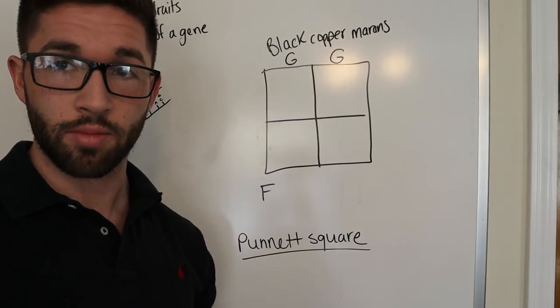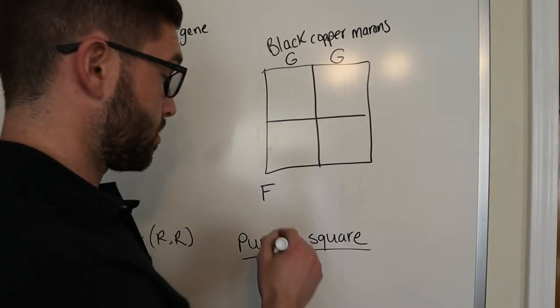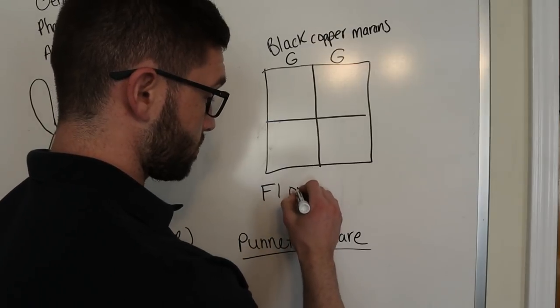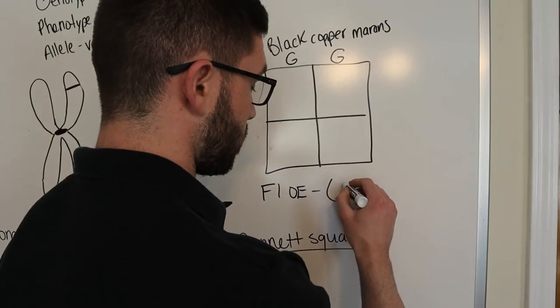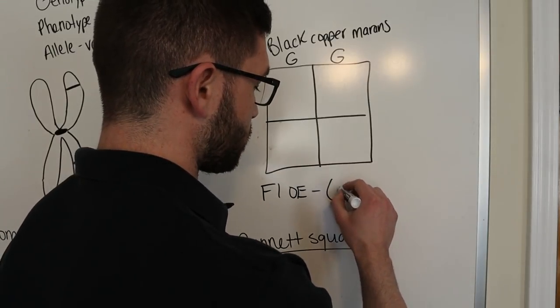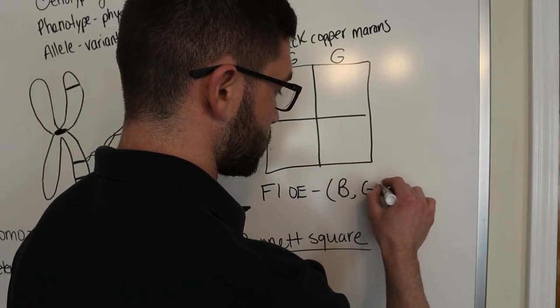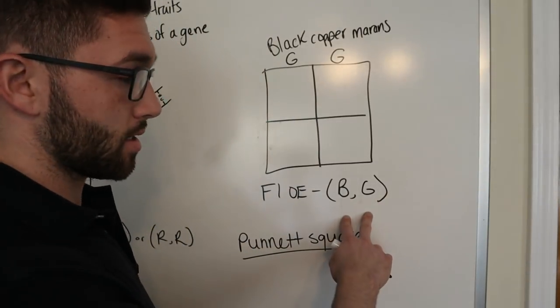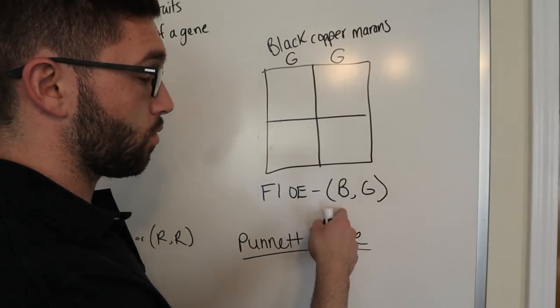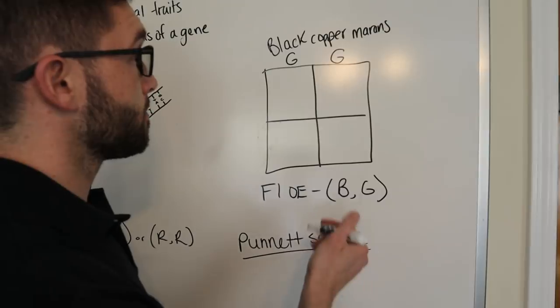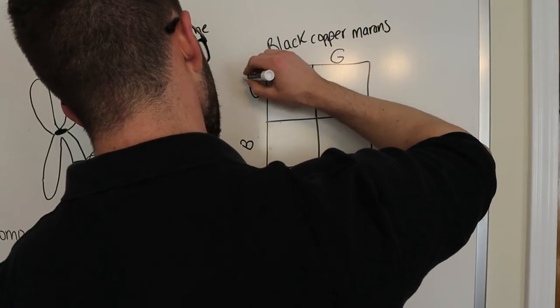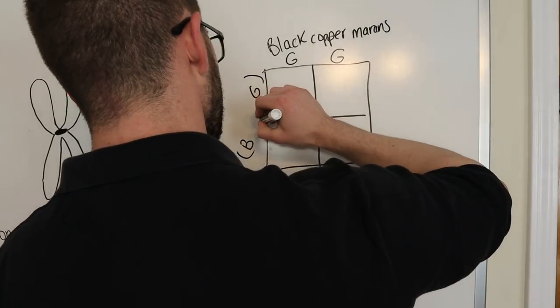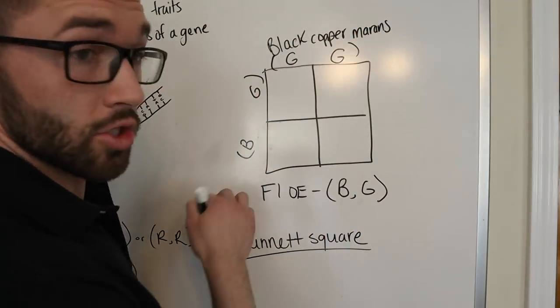We know the genotype of the first generation olive egger. So, the F1 OE, first generation olive egger, has a genotype of large B and large G. Because that's what it takes. She contains one brown and one blue egg gene. And so, we can put that up here.